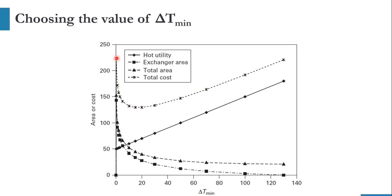If delta T minimum is zero, the area requirement is too high and cost is too high. As delta T minimum increases, cost decreases and area decreases — but at the expense of increasing utility. At a delta T minimum of around 130°C, cost is almost the same as at zero. We can conclude that 10 to 20 degrees centigrade is the optimum point for delta T minimum, giving an efficient heat exchanger network design. This diagram is very important for heat exchanger design and selection of delta T minimum.